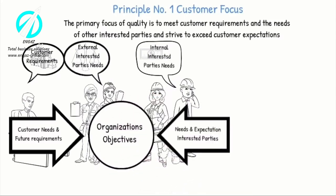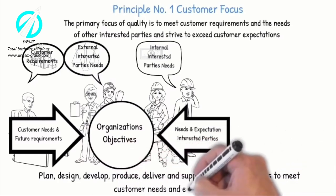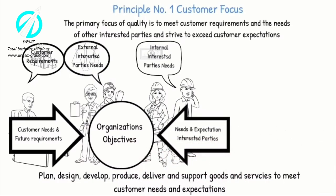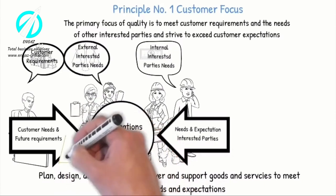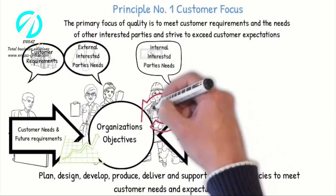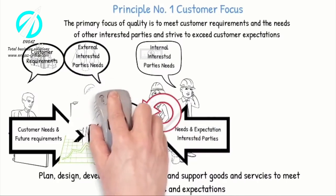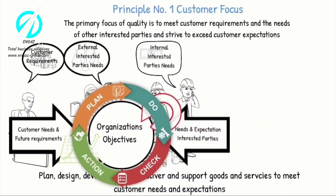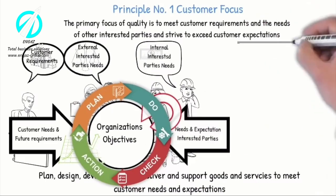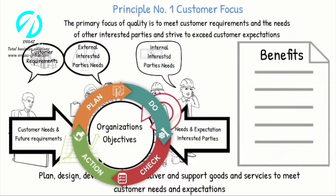The organization must implement a system to deliver and support goods and services to meet customer needs and expectations. It is important to measure and monitor customer satisfaction and take appropriate actions, and also to determine the needs and expectations of interested parties that can affect customer satisfaction. The Plan-Do-Check-Act model is an effective approach to systematically manage, control and continually improve all processes focusing on and satisfying the customer needs.